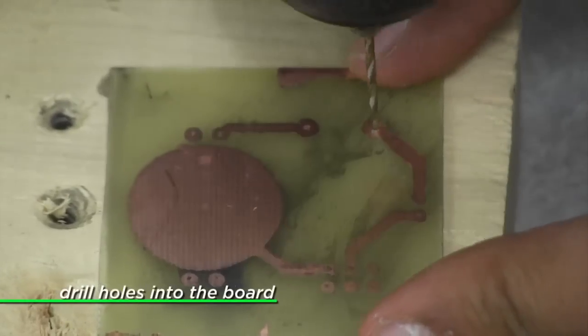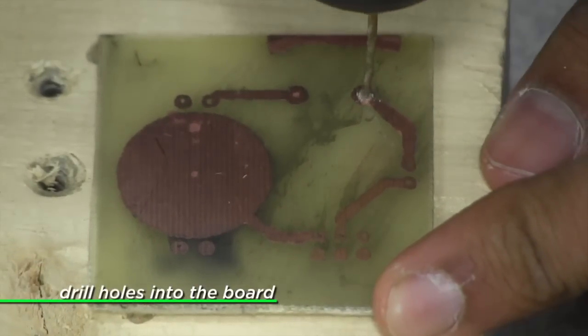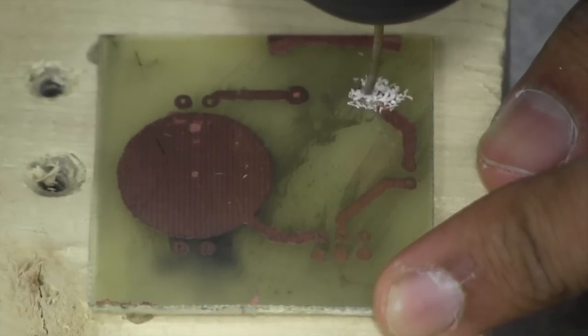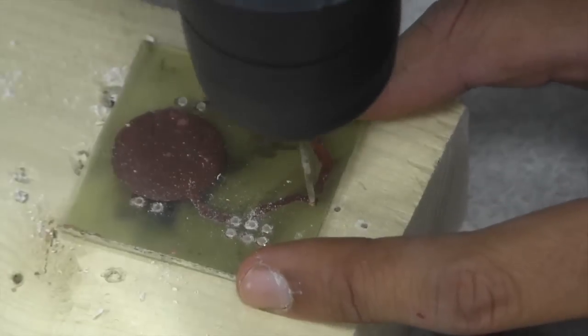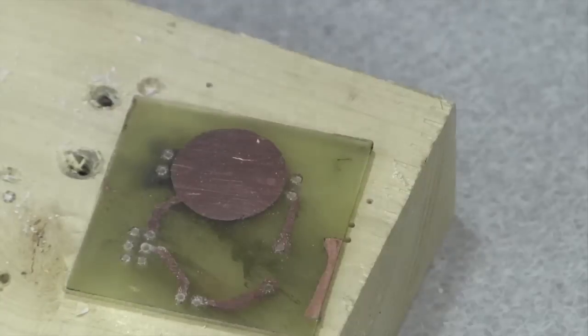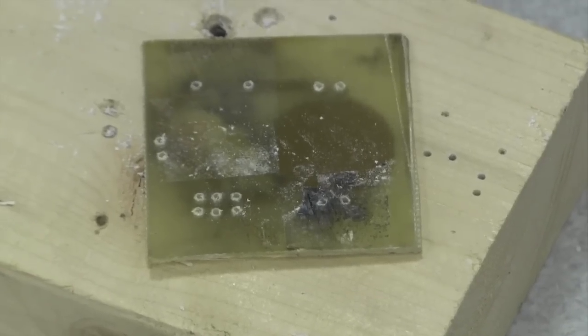Next, we need to drill holes into the board so that we can put the parts of the circuit onto the board. We use a small drill bit that is smaller than the circles on our printed circuit. We also drill on top of another piece of wood to make sure we don't damage other surfaces.